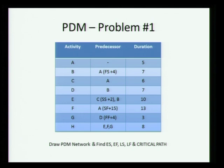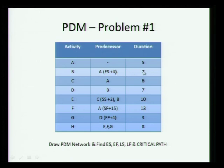Let us take up a problem which we will solve using these relationships. You have here all these activities A to H. When we say predecessor, it means for B the predecessor is A with a finish-start relationship with a lag of 4, and the duration of B is 0. So what I want you to do first is draw the PDM. Once you draw the PDM, we will see the network and then go ahead and start doing the analysis.